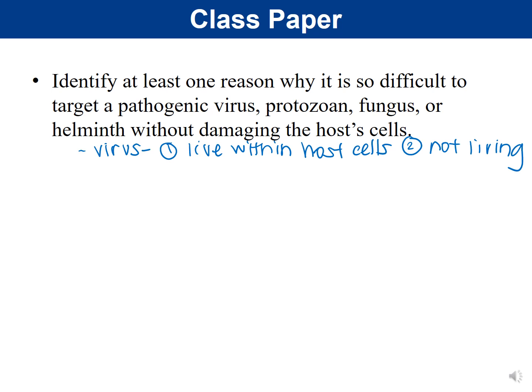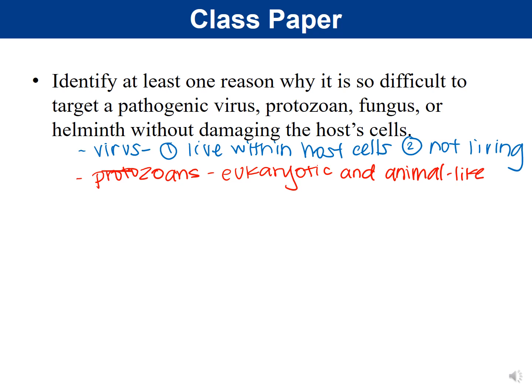Protozoans are difficult to treat because they are eukaryotic and animal-like. Because protozoans are eukaryotic, they have more in common with our cells than bacteria do. We can't target peptidoglycan — they don't have it. We can't target 70S ribosomes — eukaryotic cells don't use 70S ribosomes. We can't target certain types of metabolism because their metabolism may be more similar to ours. Protozoans are more difficult to target simply because they are eukaryotic and have more in common with animal cells.